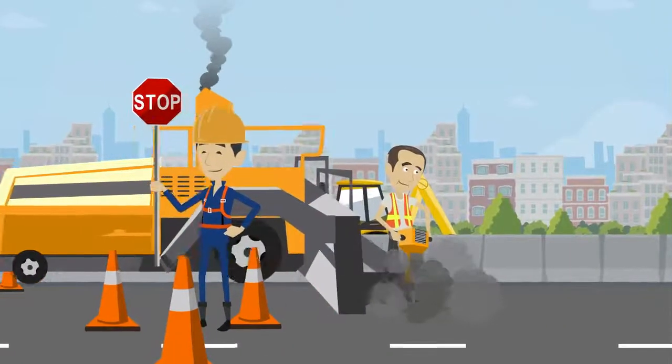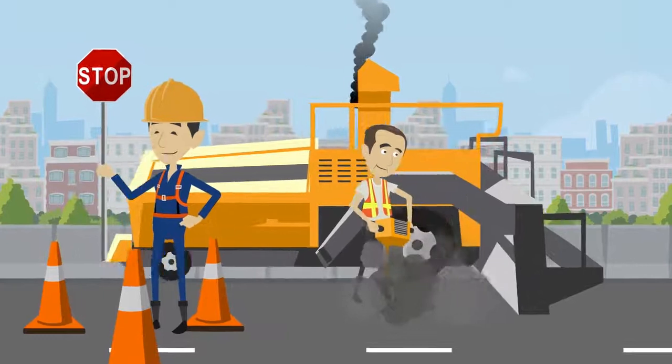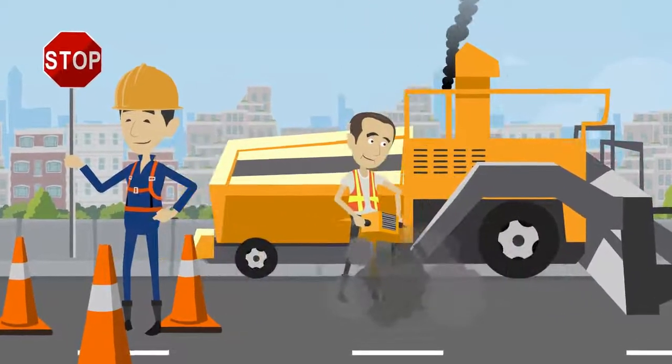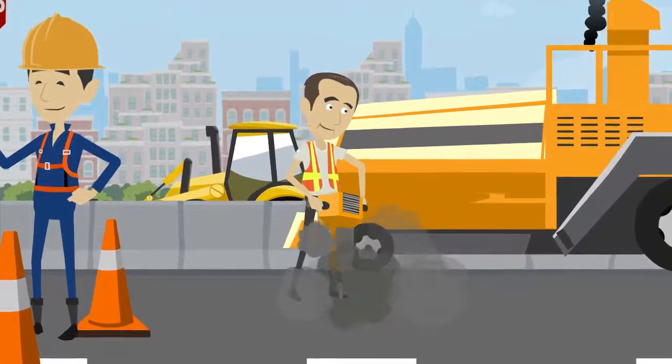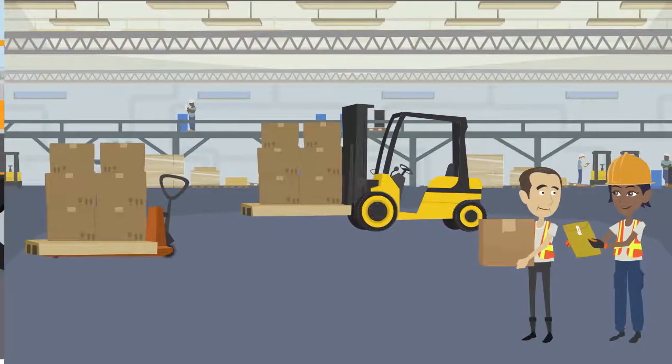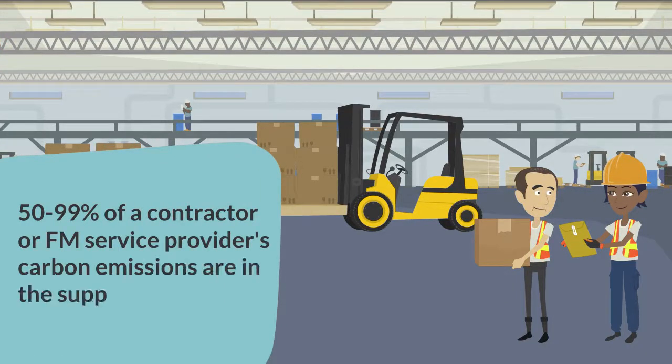Science-based targets require businesses to look not only at their direct emissions, such as the fuel they burn and the electricity they use, but also their indirect emissions, where these are very large. And in a sector like the built environment, between 50 and 99% of a contractor or FM service provider's carbon emissions are in the supply chain.